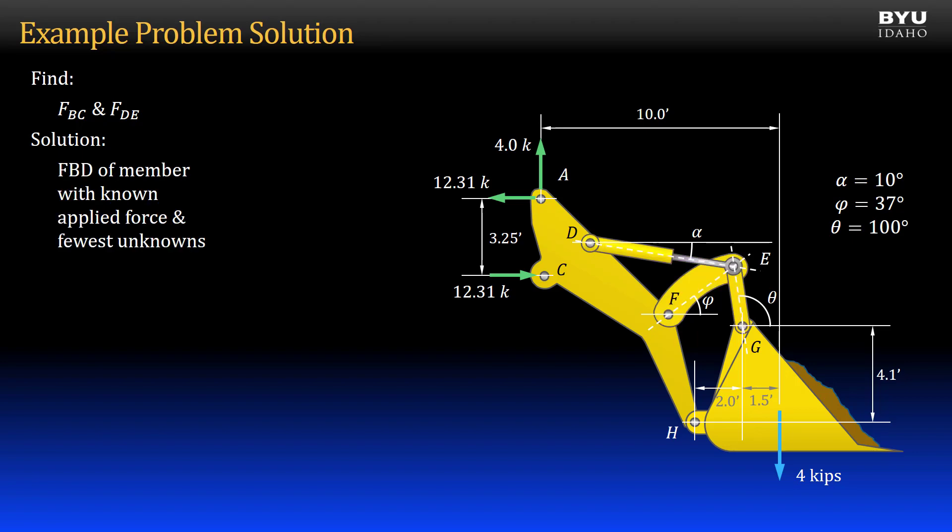My next step then is to analyze a free body diagram of one of the members. The bucket will be the best choice because it has one known force acting on it and only three unknowns since member EG is a two-force member. I can solve for all the unknowns.